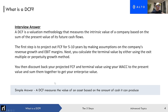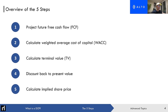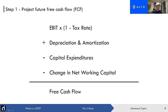The simple answer is that a DCF just measures the value of an asset based on the amount of cash it can produce from today until the end of time. We'll go through this by covering the five steps of building a DCF: first, project out your future free cash flow; then calculate your weighted average cost of capital (WACC); then calculate your terminal value; then discount everything back to present value; and finally calculate your implied share price.